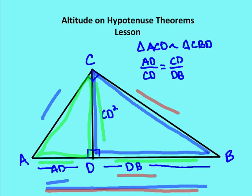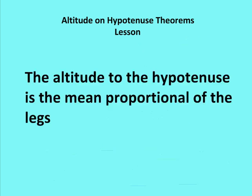If you prefer another way to think about it, the altitude to the hypotenuse is the mean proportional of the legs. That definition may be a little more difficult, but if it helps you understand the altitude on hypotenuse theorems, that's great.